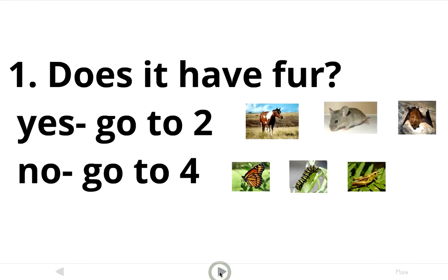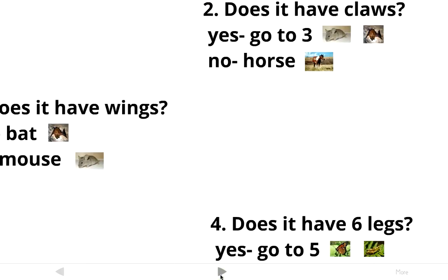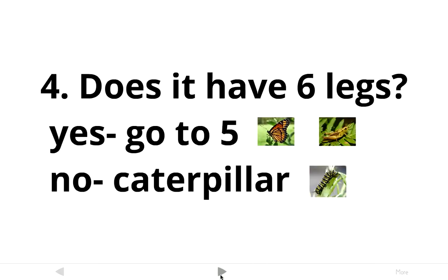Now let's deal with the organisms that do not have fur — the no answer to number one — which sends us to number four, the next number in line. We're now looking only at the butterfly, the caterpillar, and the grasshopper. The butterfly and the grasshopper both have six legs, so our question is: does it have six legs? If yes, we're talking about the butterfly and the grasshopper. If no, we're talking about the caterpillar, so we can go ahead and name it.